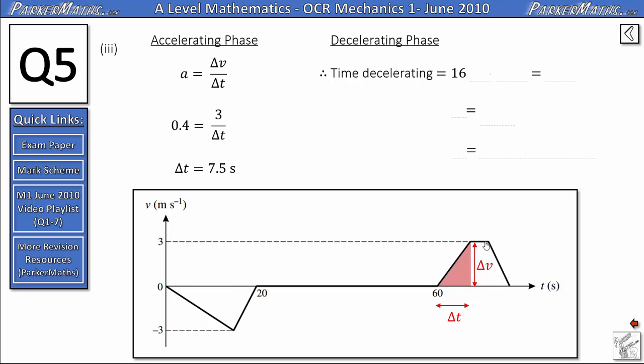In the question it told us this part here we used before is 4. This part we just found is 7.5 and 16 subtract 4 subtract 7.5 gives us 4.5 seconds. That means the decelerating phase, which we're going to look at now, takes 4.5 seconds.